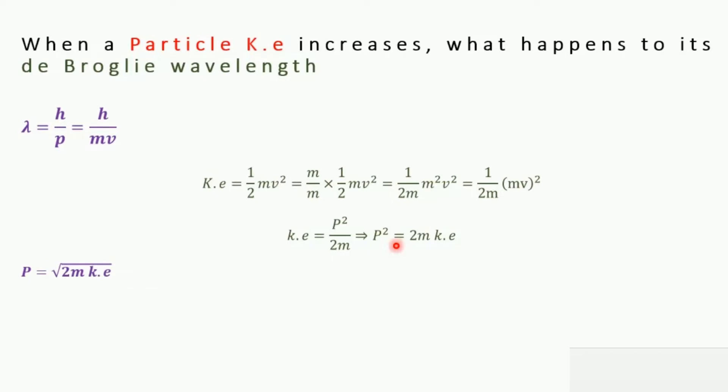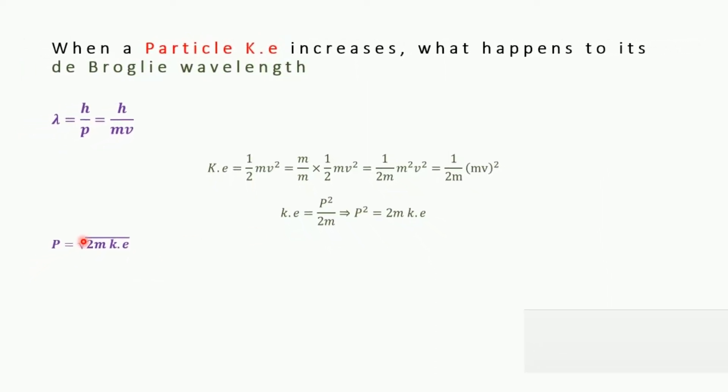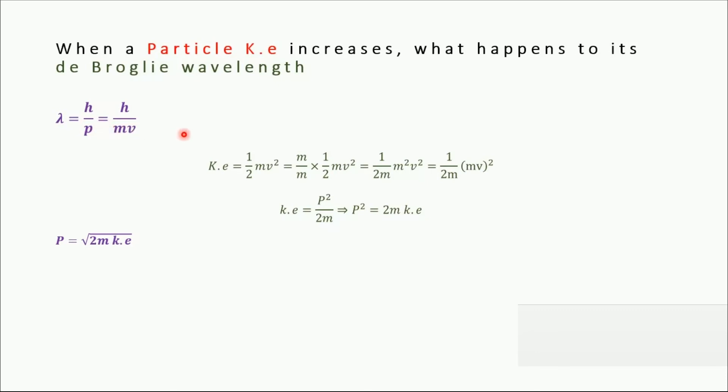Now we're going to substitute the value of momentum from this equation into the first equation. After substituting, we get lambda equals h divided by the square root of 2m times kinetic energy.